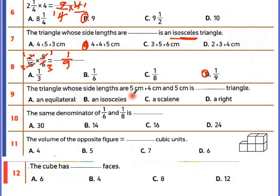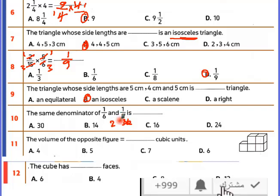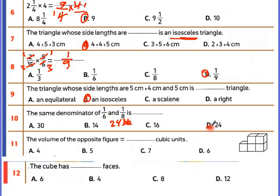The triangle whose side lengths are 5, 4, 5 — two sides are equal, so it's isosceles. For the same denominator with 6 and 8: take the larger denominator times 2 gives 16, but 16 is not in the table of 6. So try the larger denominator times 3, giving 24. Since 24 works in the table of 6, the same denominator is 24.